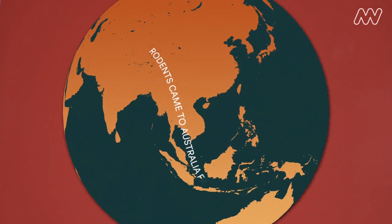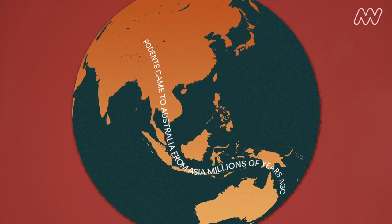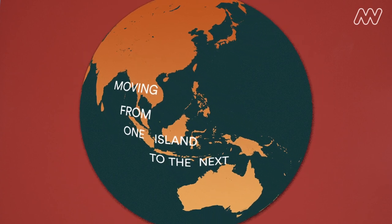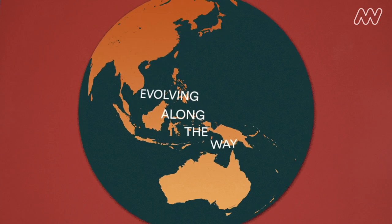Rodents came to Australia from Asia millions of years ago, moving from one island to the next, evolving along the way.